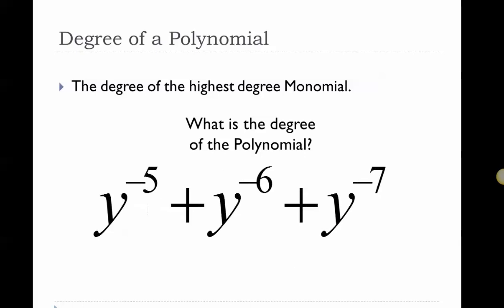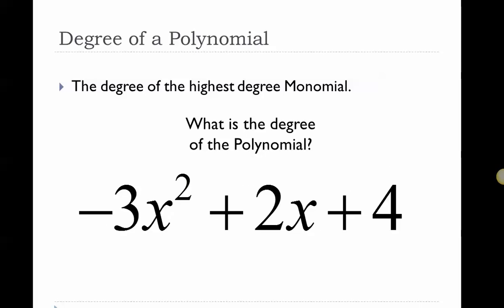This next one — don't think too much on it. It's not a polynomial, because none of these terms are monomials. A polynomial has to be made up of only monomials. These all have negative exponents, which are not whole numbers, therefore this is not a polynomial. For the last one: you've got a second degree monomial, a first degree monomial, and a zero degree monomial. Putting those together gives a second degree polynomial with a leading coefficient of negative three.